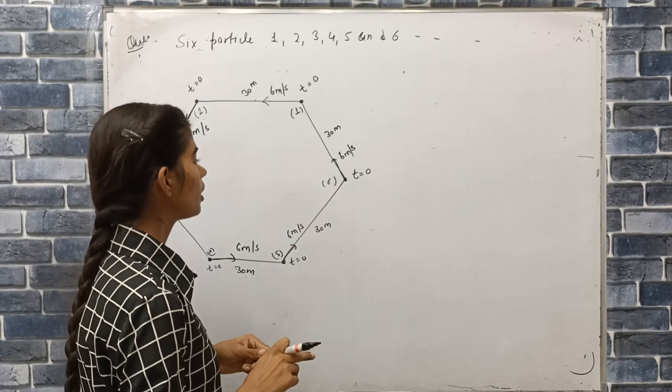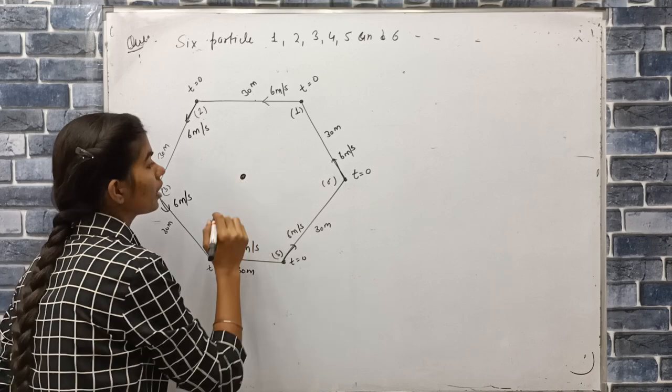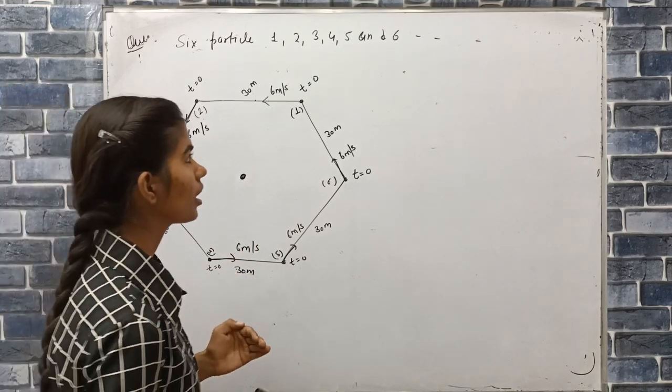Distance and displacement nikaal hi hai each particle ki. To ispa kya kya jho question aate hai, yeh iske pichhe, yeh iske pichhe. To yeh yaha pae center me aake yeh kya kere inghe? Milenghi. Center me aake yeh kya kere inghe? Milenghi.